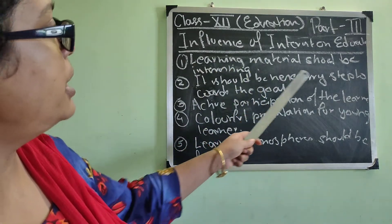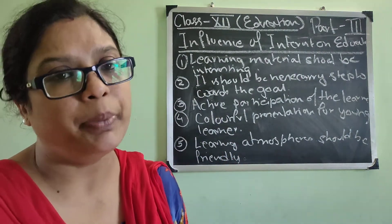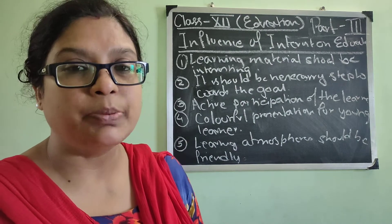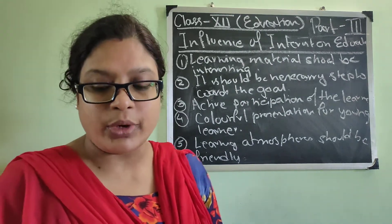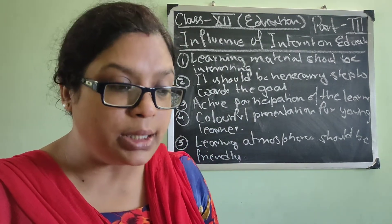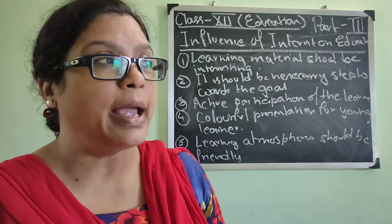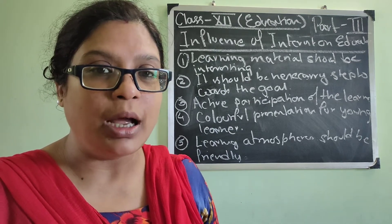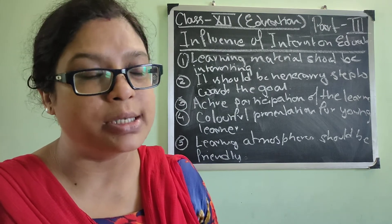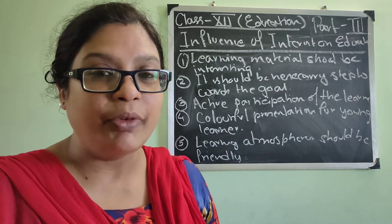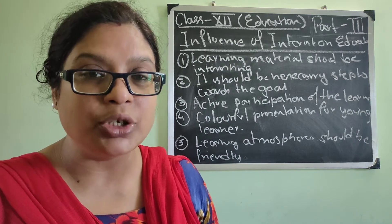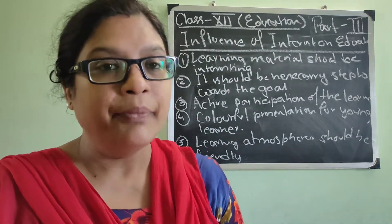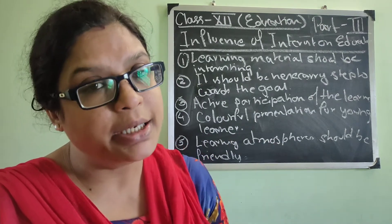First, learning material should be interesting. We put colorful things in the case of young learners. As you increase in age, you will see there are fewer pictures in your books and more text-based information. When you were in grades four, five, or six, your books were filled with colors, stories, and colorful presentations. What is presented should be changed according to the age group and the interest of the child.